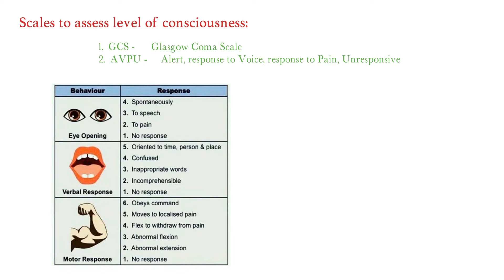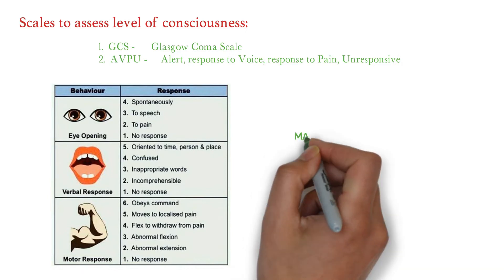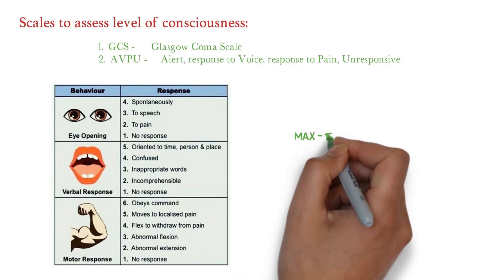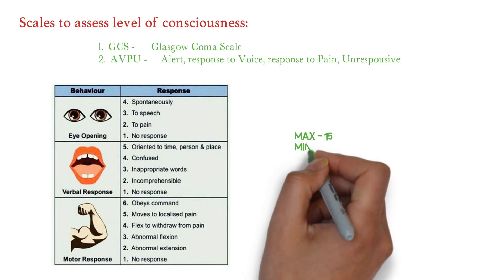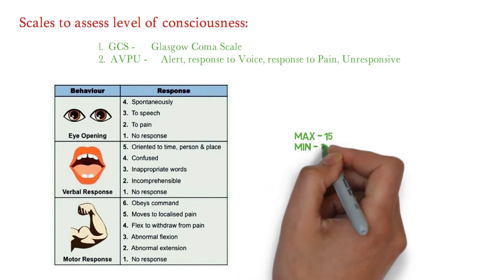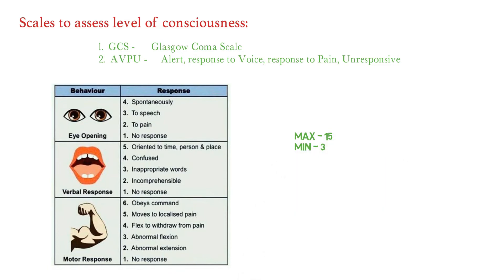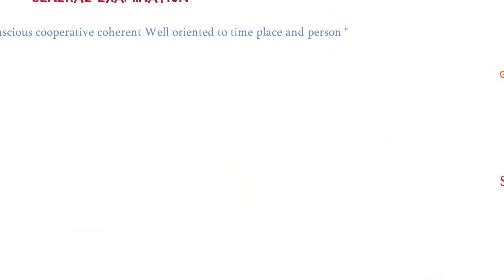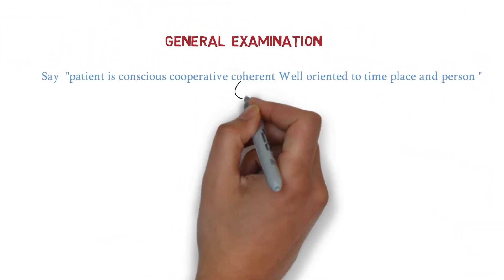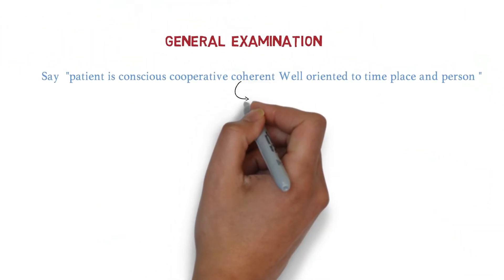Remember, the examiner might ask: what is the maximum score in the Glasgow Coma Scale? It is 15. And the minimum? It is 3, not 0 — because in each component, scoring starts from 1. So the minimum possible score is 3.